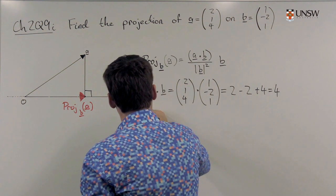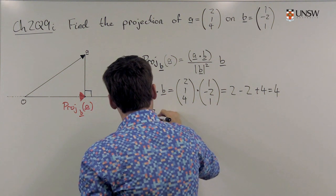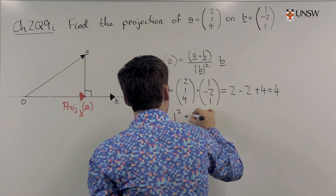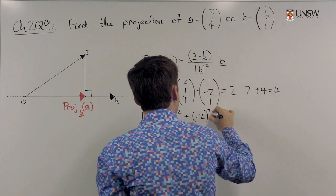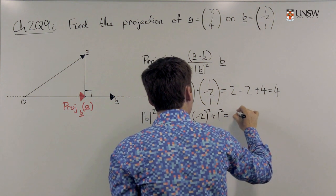And ||b||² equals 1² plus (-2)² plus 1², which equals 6.